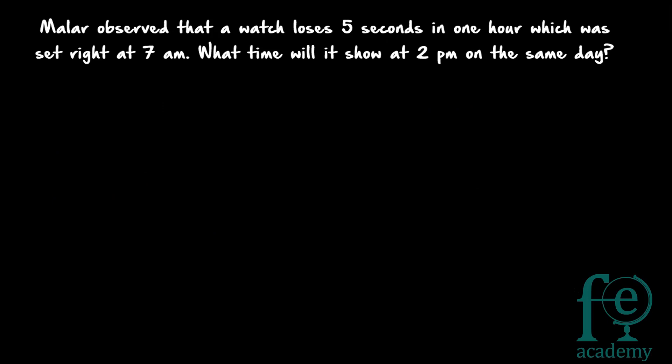Now the second question. Muller observed that a watch loses 5 seconds in 1 hour, which was set right at 7 a.m. What time will it show at 2 p.m. on the same day? The watch was working properly till 7 a.m., and after that it started to lose 5 seconds every hour — it won't make much difference, but we need to calculate what time the watch will show at 2 p.m.